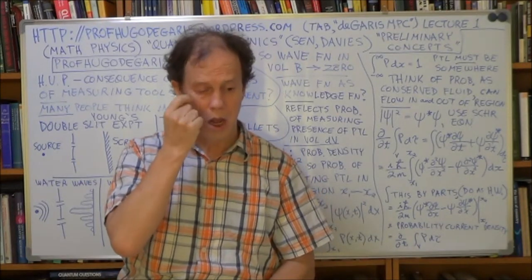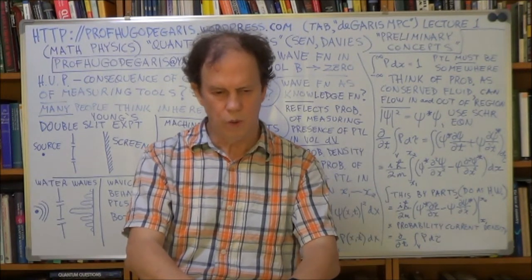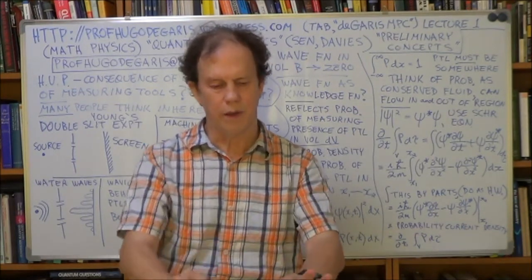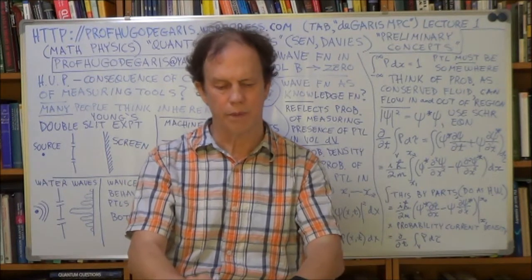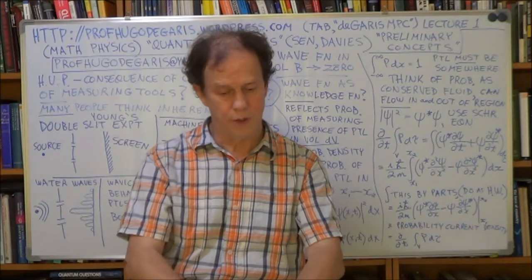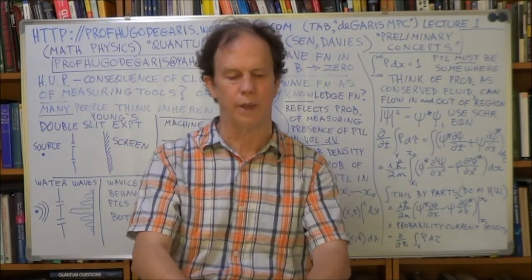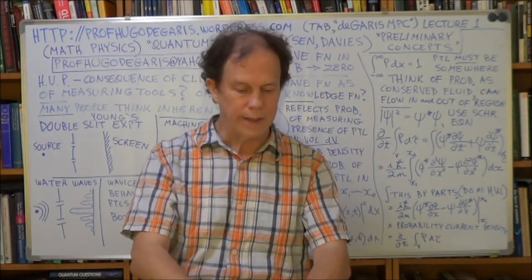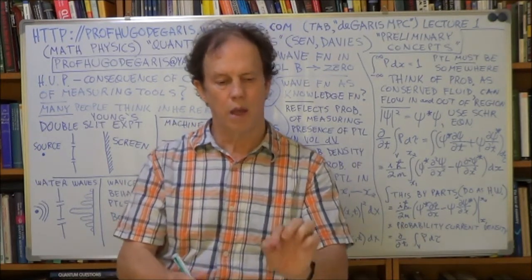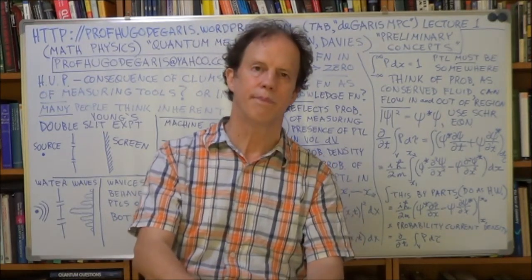Now you do a measurement. You have this wave function from Schrödinger's equation that's sort of spread out with different densities in the volume. This wave function's spread out over the total volume of the box, so you'll have a part of your wave function in volume A and another part in volume B.